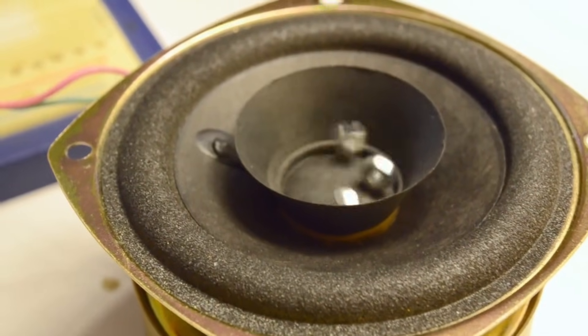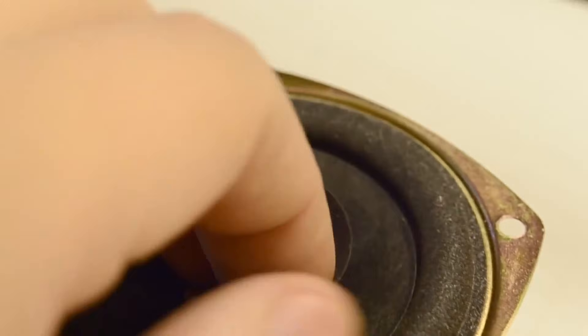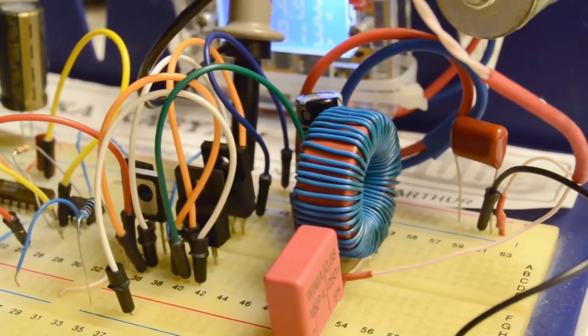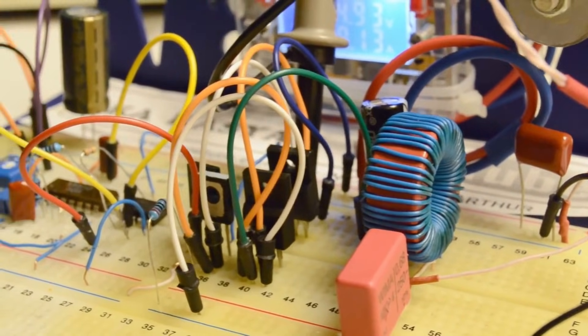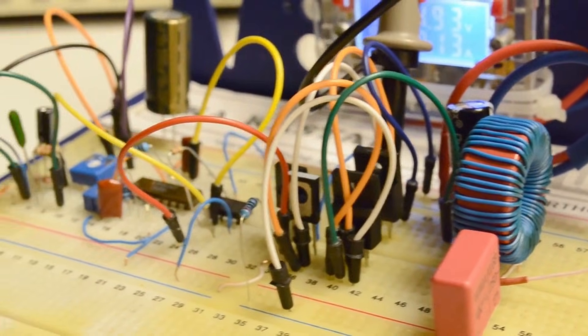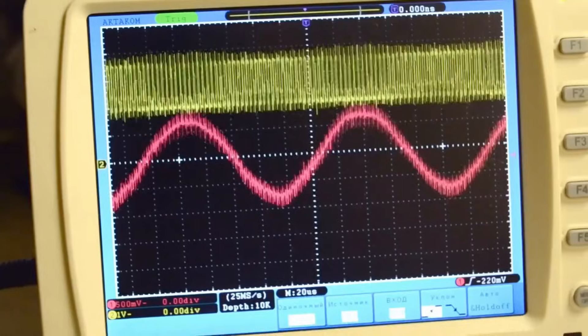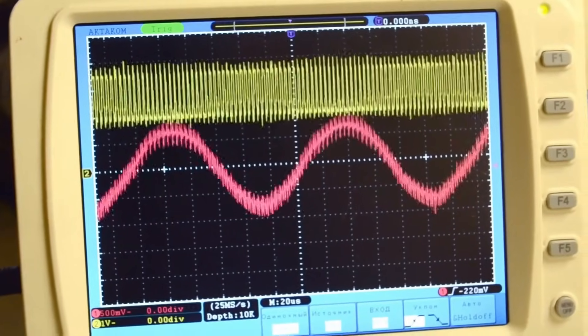Later on, I rewound the output inductance to increase its value and slightly lower the filter's cut-off frequency. This improved the suppression of the high-frequency component in the output signal. The signal on the 8-ohm load turned out as follows.